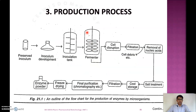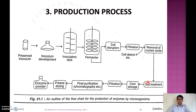Here is a pictorial representation of the production process. First we preserve and prepare the inoculum, then develop it in a seed tank for multiplying the inoculum. The culture media is placed in the fermenter and the inoculum is added. After 5 to 7 days, the cells are disrupted, filtered to remove cell debris, nucleic acids are removed, and the enzyme is precipitated by salt treatment and stored in a cool place.